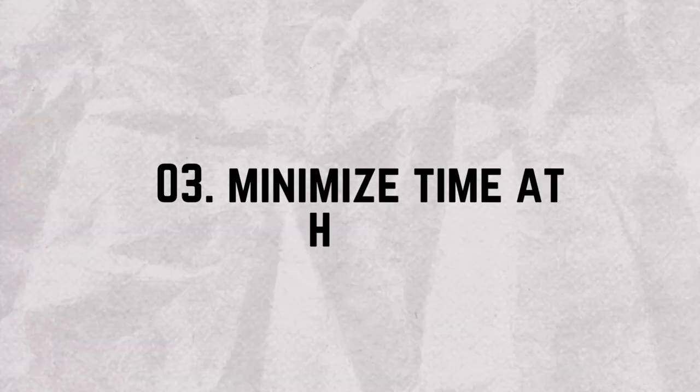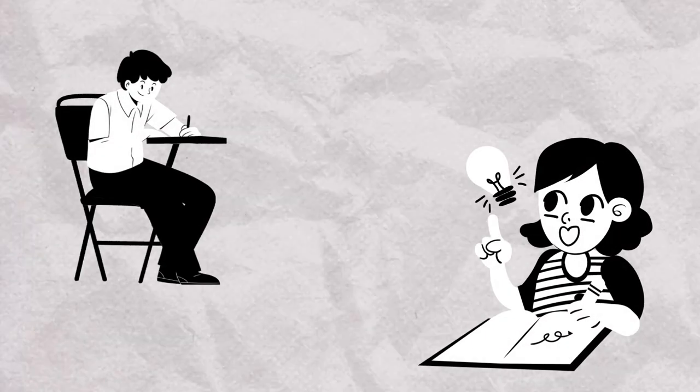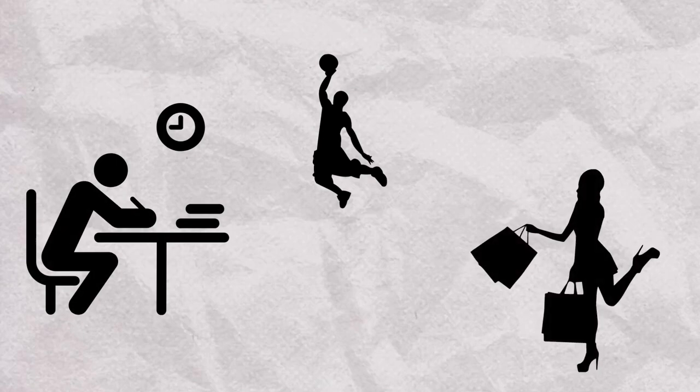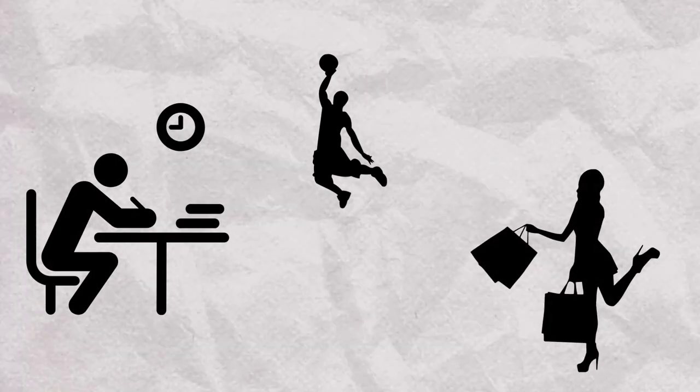Number three, minimize time at home. If you live with toxic parents, consider minimizing your time at home. Spend time elsewhere, such as studying at a friend's house, staying late at school or work, or joining extracurricular activities. Create a schedule that limits your exposure to toxic environments.